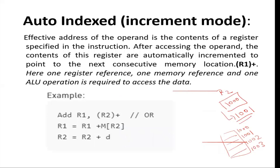Next is auto-indexed increment mode. Auto-indexed addressing mode has two variations: increment mode and decrement mode. In auto-indexed increment mode, whatever register is mentioned, we fetch the memory reference of that register and increment it by one. For example, if register R2 contains 1000, we increment it by one and the memory address becomes 1001, and we get our operand at memory address 1001. So the value is incremented by one and that becomes our effective address.